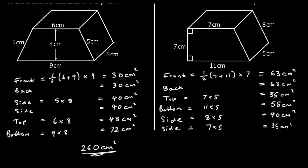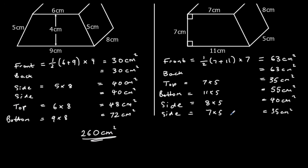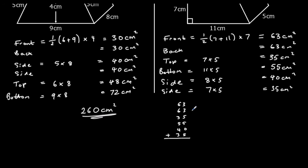So we want the total surface area — the area of every side added together. Adding them up in columns: the units give 21, carry 2; the tens give 29, carry 2; giving us 291cm squared.